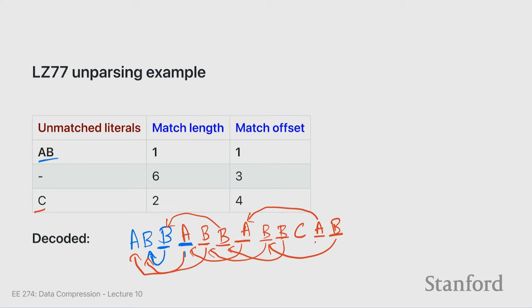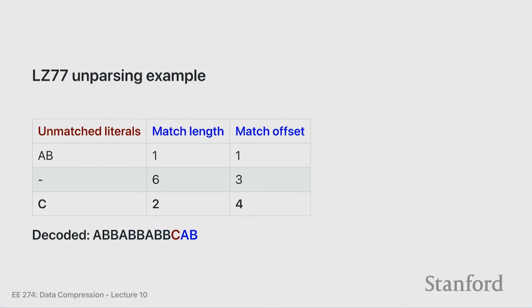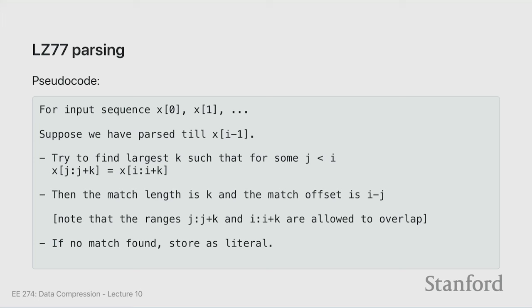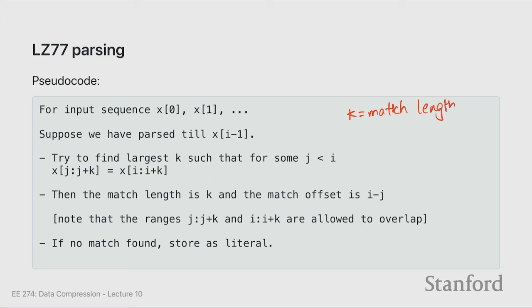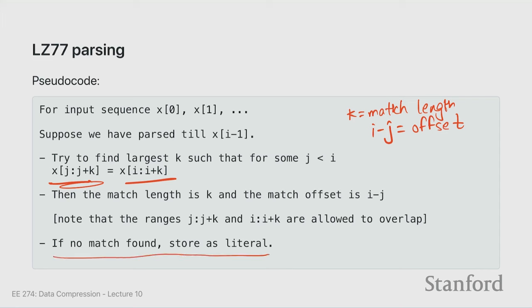You can write LZ77 in very simple pseudocode. For an input sequence x0, x1, ..., having encoded up to x_i, you find the largest k — the match length — where x_i through x_{i+k} matches x_j through x_{j+k}, and i minus j is the offset. If no match is found, store as a literal. For decoding: read any literals and copy to output; if you have a match of length l and offset o, copy it. If length is less than offset, it's a simple copy; if offset is small, the match overlaps itself and you decode character by character.